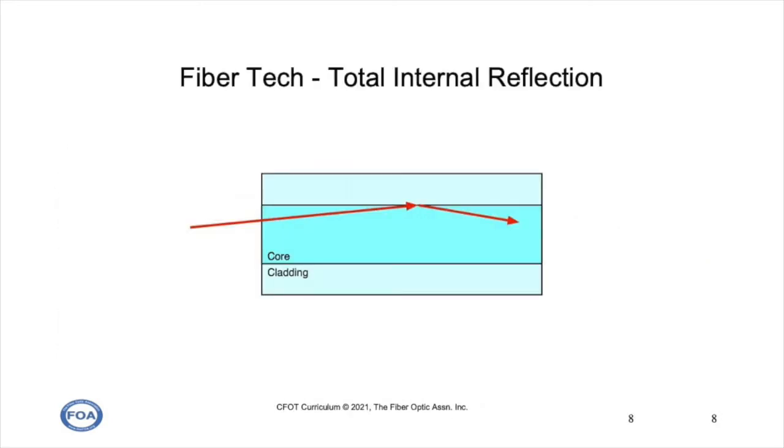Total internal reflection causes light to be trapped in the core of an optical fiber, and that happens because of the difference in the index of refraction between the core and the cladding.